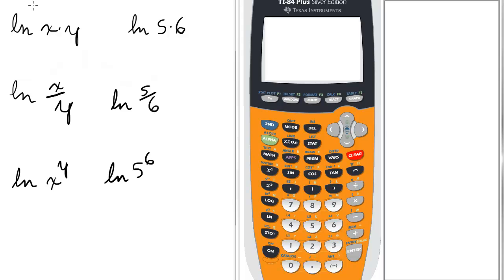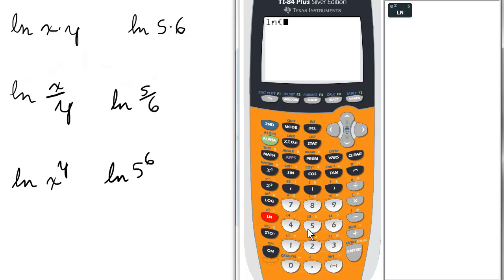Okay, using only the calculator, we're going to try to figure out the laws of natural logs. So the ln of x times y, substituting numbers in the calculator, we will plug in the ln of 5 times 6.